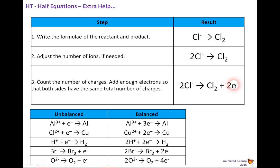Looking at further examples: aluminium — Al³⁺ + 3e⁻ → Al, because there are 3 positive charges so we need 3 electrons. Copper: Cu²⁺ + 2e⁻ → Cu. Hydrogen: 2H⁺ + 2e⁻ → H₂. Chlorine is virtually identical to the example above because it is a halogen. Oxygen: 4OH⁻ → O₂ + 2H₂O + 4e⁻ — you need 2 atoms giving 4 electrons. You need practice to get these right. And that's the end of this video.